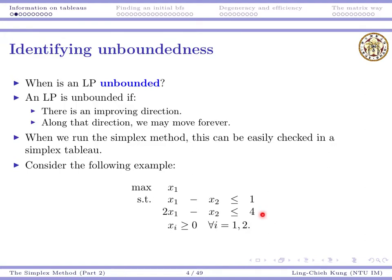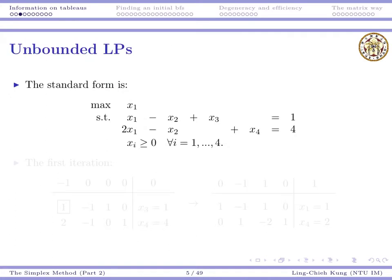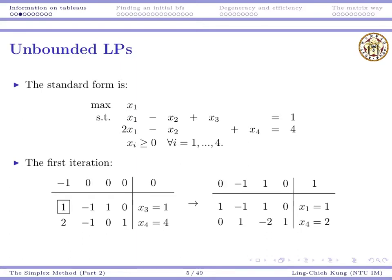We have a maximization problem with two equality constraints and two variables. We first get the standard form before running the simplex method, introducing two slack variables so there are now four variables. Initially there is a negative reduced cost, so that variable enters. The ratio test gives ratios of 1 and 2, so 1 is smaller, and we pivot to get the second tableau.